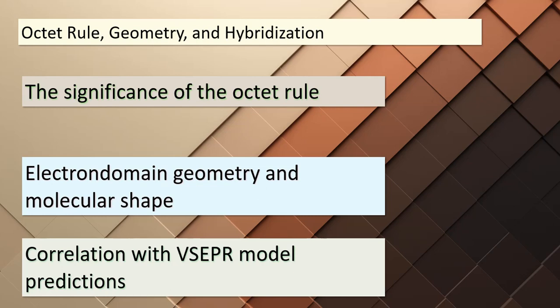The octet rule is a fundamental principle guiding how atoms bond to achieve stability. It states that atoms tend to share electrons to achieve a stable electron configuration, often resembling the noble gases configuration. This sharing results in a specific molecular geometry, which can be predicted using the VSEPR model. And here's where hybridization comes into play. When we know the electron domain geometry, hybridization helps us understand how atomic orbitals mix to create hybrid orbitals, aligning with the predicted molecular shape.